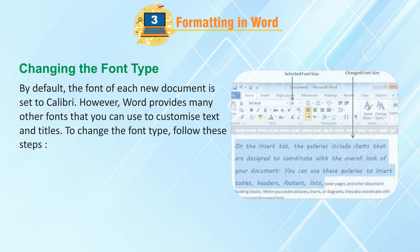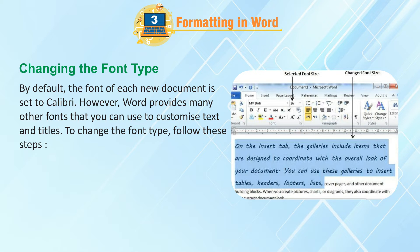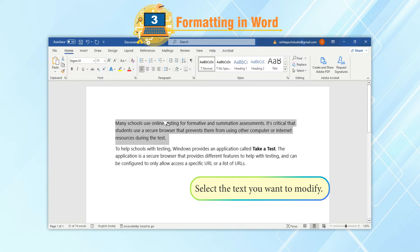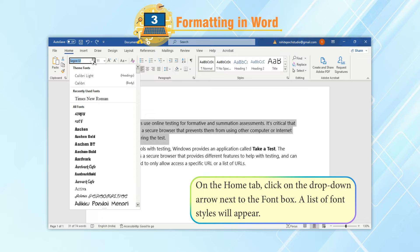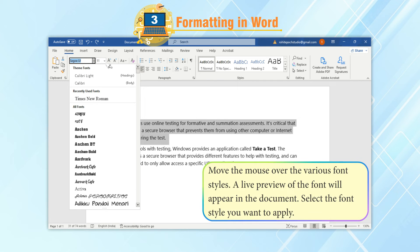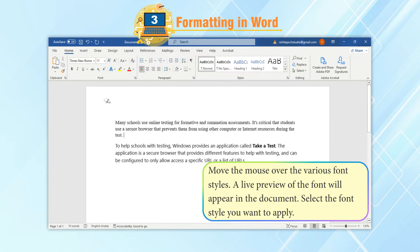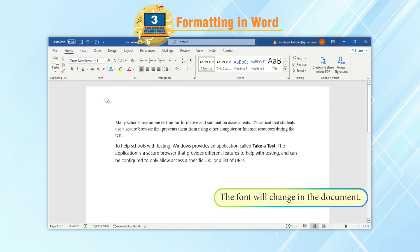Changing the Font Type. By default, the font of each new document is set to Calibri. However, Word provides many other fonts that you can use to customize text and titles. To change the font type, follow these steps: Select the text you want to modify. On the Home tab, click on the drop-down arrow next to the Font box. A list of font styles will appear. Move the mouse over the various font styles. A live preview of the font will appear in the document. Select the font style you want to apply. The font will change in the document.